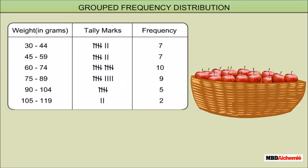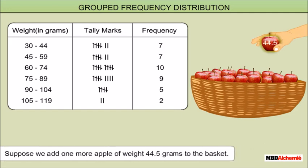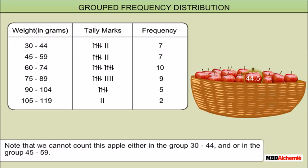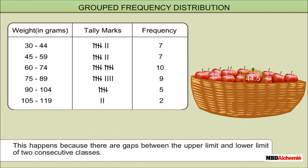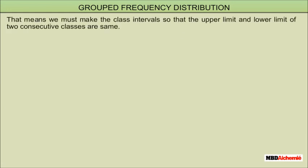In the grouped frequency distribution of 40 apples, suppose we add one more apple of weight 44.5 grams to the basket. Note that we cannot count this apple either in the group 30 to 44 or in the group 45 to 59. This happens because there are gaps between the upper limit and lower limit of two consecutive classes. Therefore, we must make the class intervals so that the upper limit and lower limit of two consecutive classes are the same.